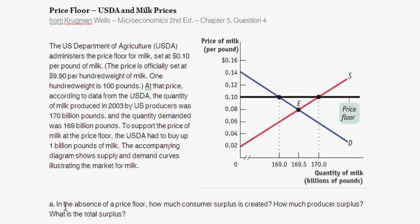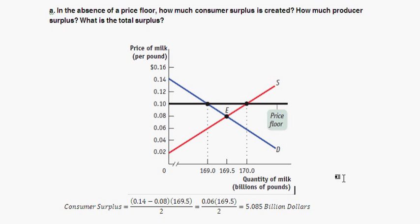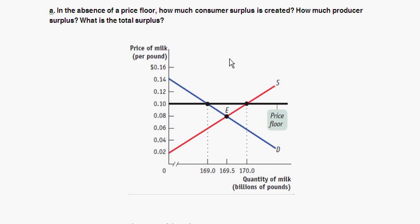Part A asks: in the absence of the price floor, how much consumer surplus, producer surplus, and total surplus is created? Without the price floor, we ignore that black line and use the equilibrium point E, where quantity demanded equals quantity supplied. The equilibrium price is 8 cents per pound of milk, and the equilibrium quantity is 169.5 billion pounds of milk.